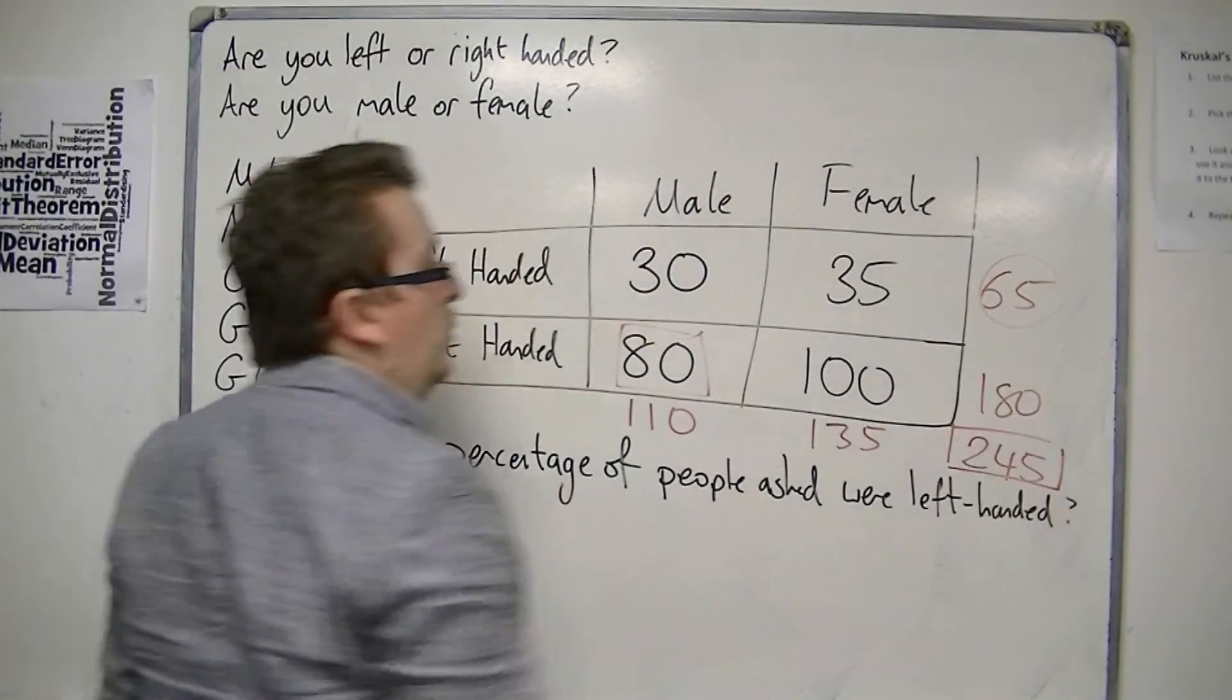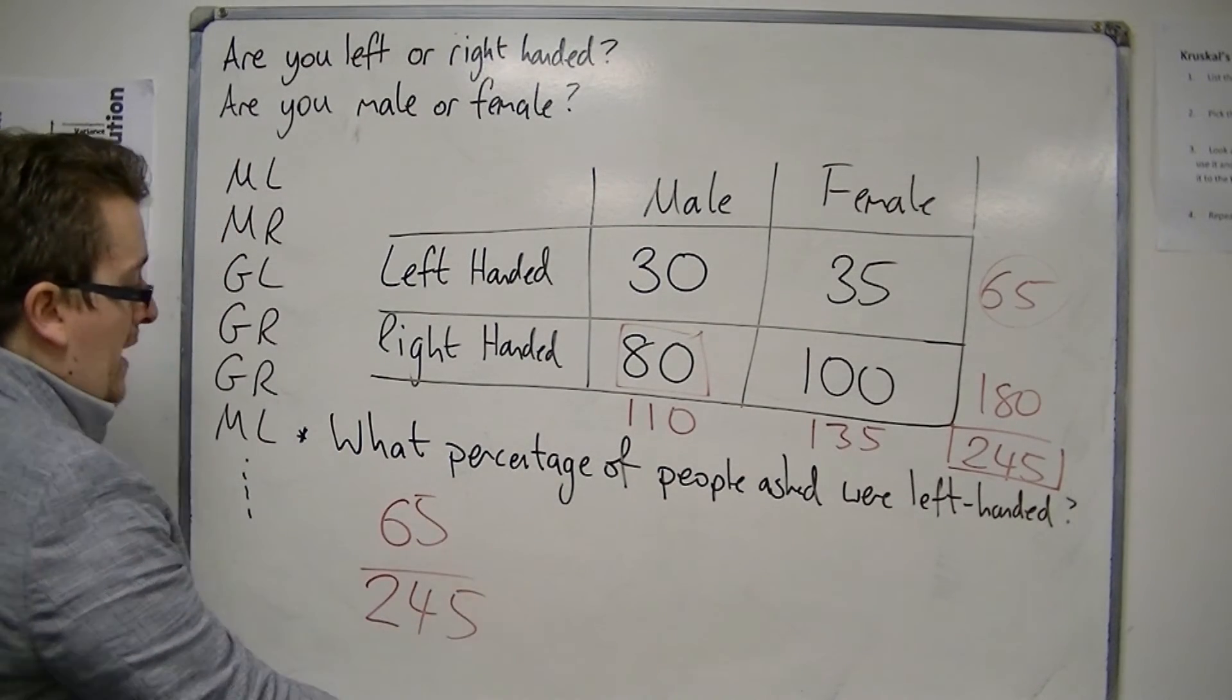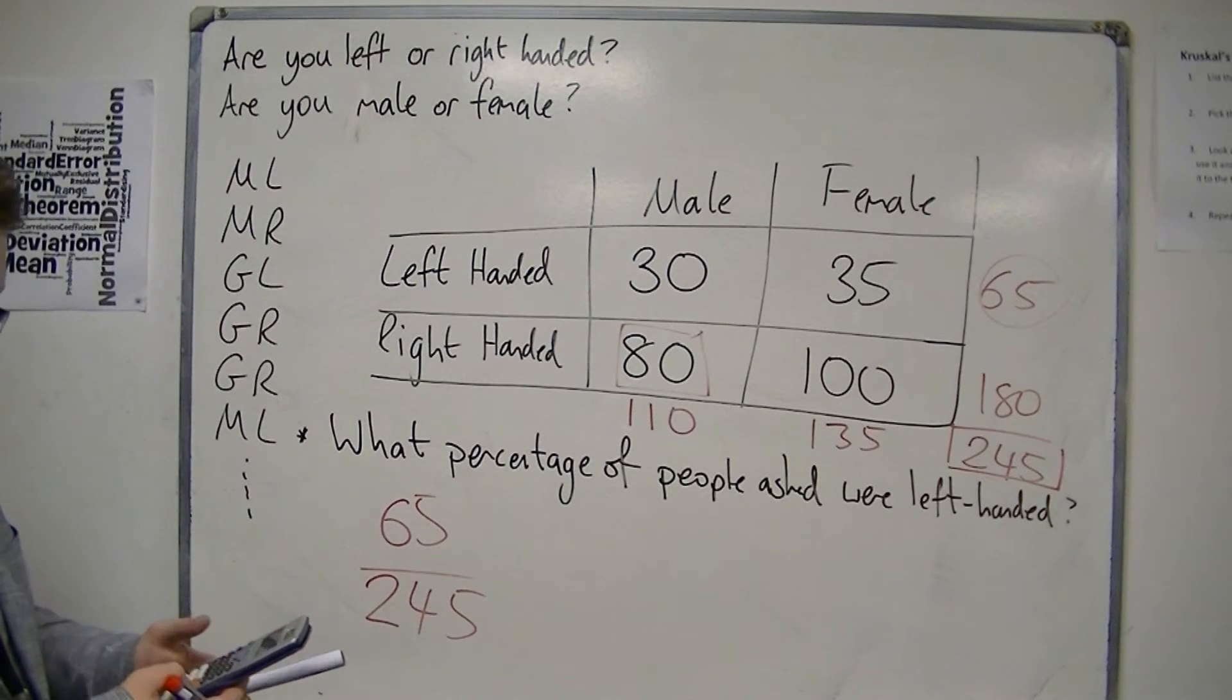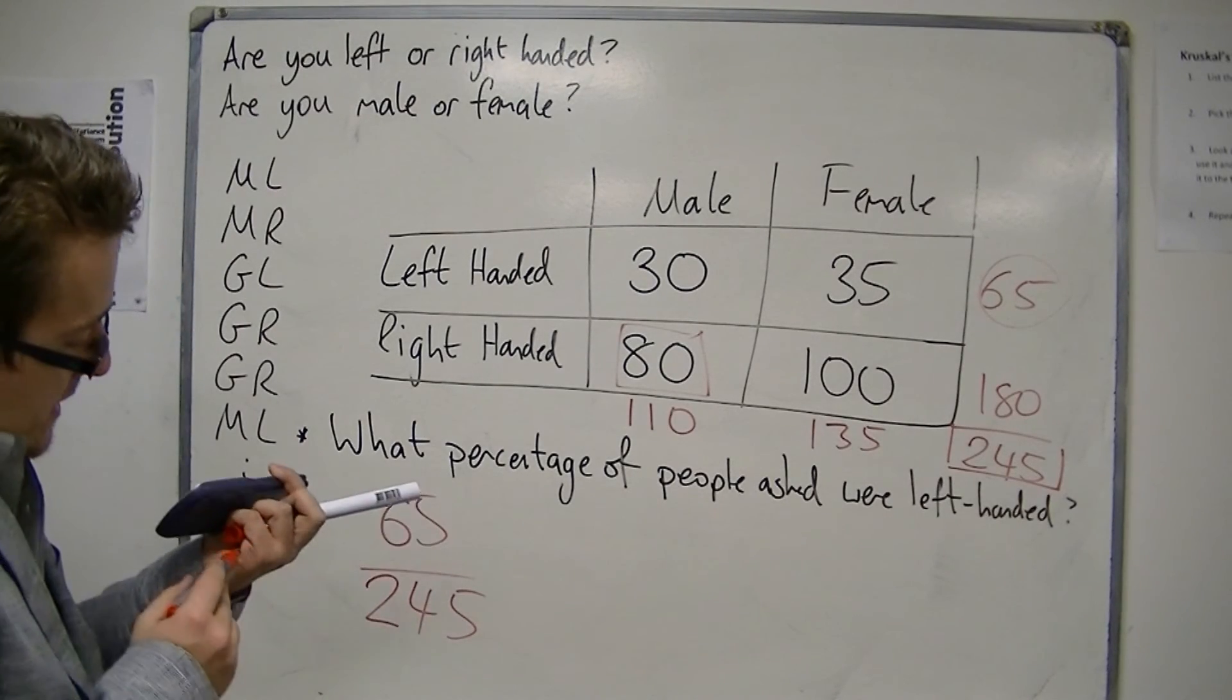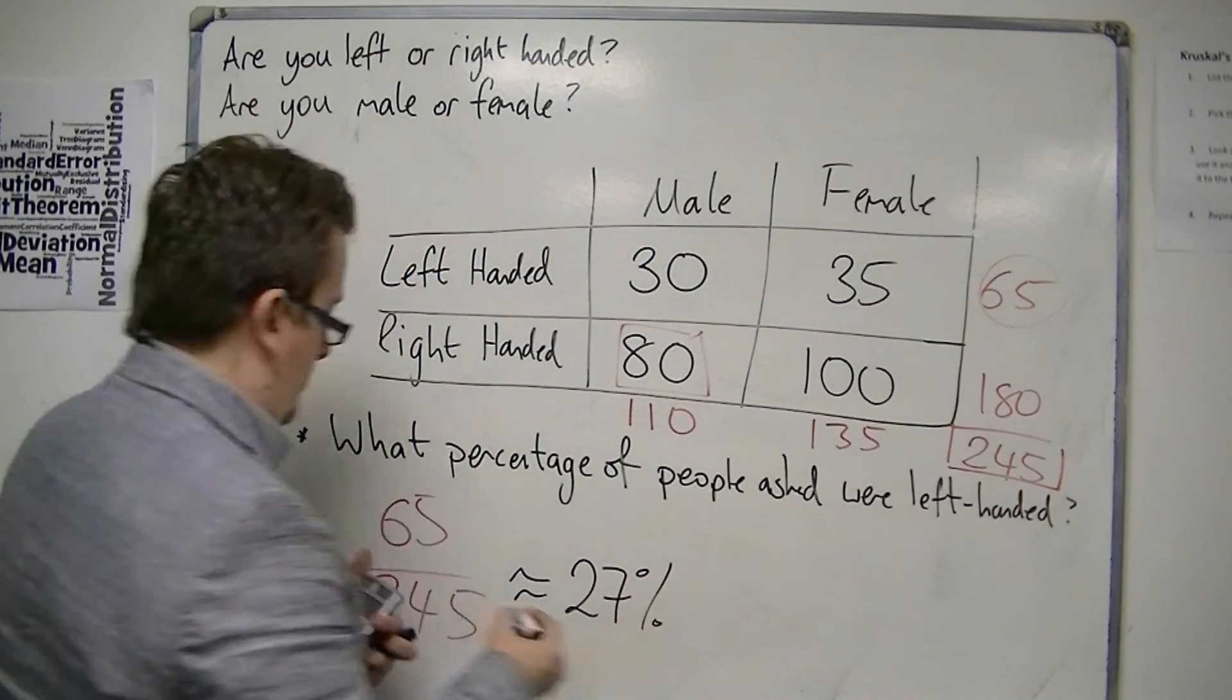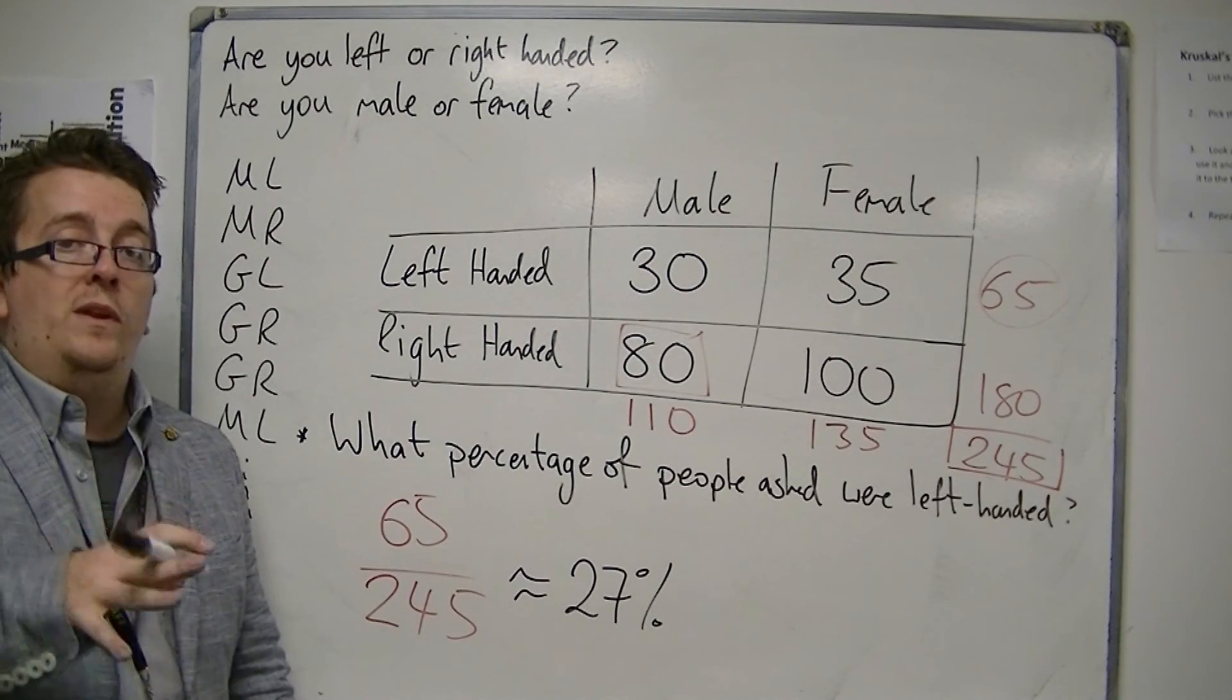So this is my fraction, 65 out of the 245 people. And you want to convert that into a percentage. So you do it exactly the same way. Top divided by bottom, 65 divided by 245. And then multiply your answer by 100. And what we get is approximately 27%. So 27% of the people that I surveyed were left handed.